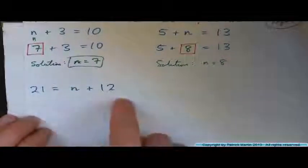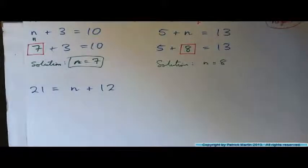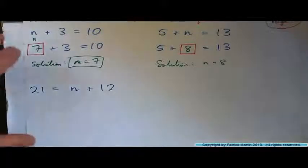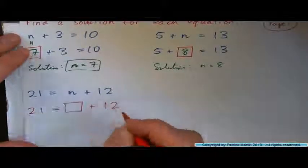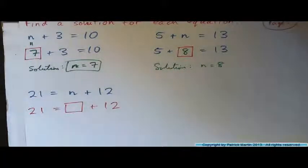Now how about this one, press pause and do this guy, twenty-one equals n plus twelve. Rewrite it with a box. That always looks nice, doesn't it? Twenty-one equals box plus twelve. Write in what number will work now. What number will make the equation true?